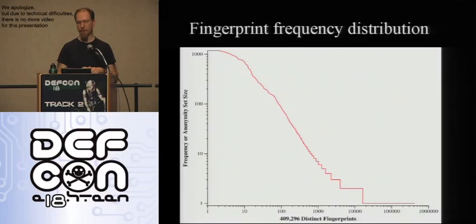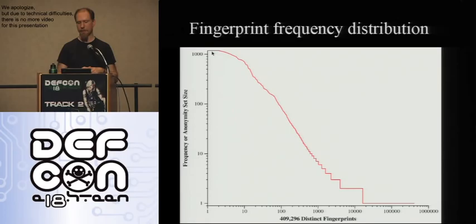This is the same data on a graph with log axes — without log axes the line just runs along the axes with no visible structure. 84% of the data is in the unique tail at the bottom. There's another group of about 20,000 people with an anonymity set size of 2, smaller groups with 3, 4, 5, and then a small number of fingerprints that weren't very unique at all. The fingerprint right at the top of that non-unique group is a Firefox instance not running JavaScript — a recent Firefox with JavaScript disabled gives a decent amount of anonymity.